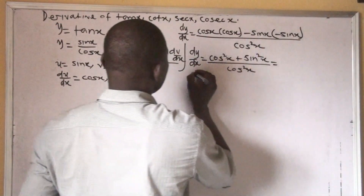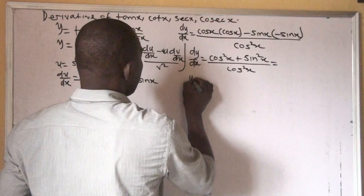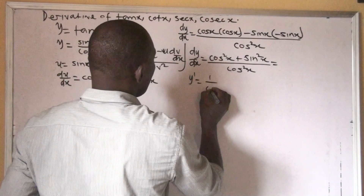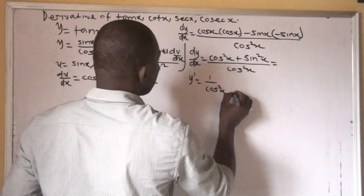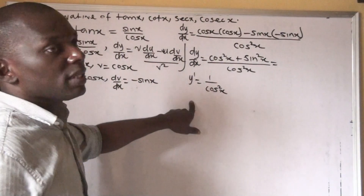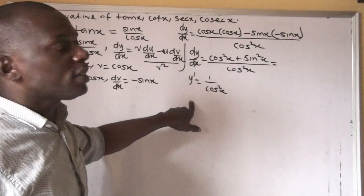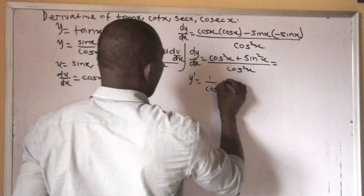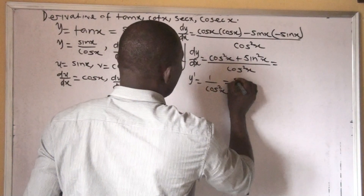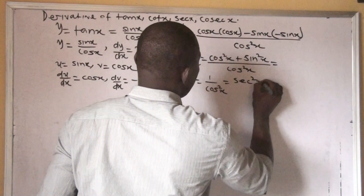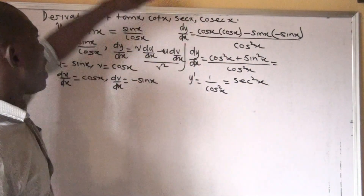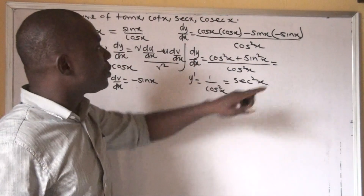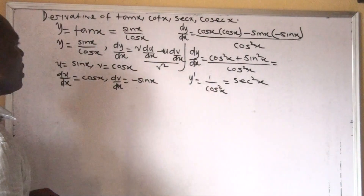Now, from trigonometry, cos squared x plus sine squared x is equal to 1. So here we have y prime is equal to 1 over cos squared x. And 1 over cos is sec, so this will become sec squared x. Therefore, the derivative of tan x is equal to sec squared x.